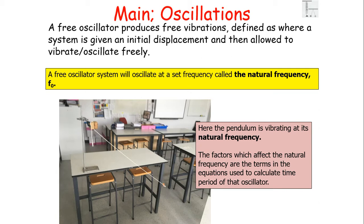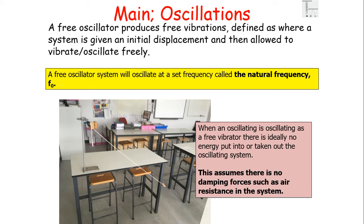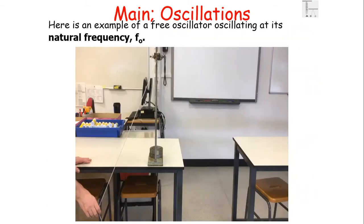The factors which affect the natural frequency are the terms in the equation used to calculate the time period of that oscillator, since time period equals 1 over frequency. When an oscillator is vibrating as a free oscillator, ideally there is no energy being put into or taken out of the oscillating system — the total energy remains fixed. This assumes there are no dampening forces such as air resistance or friction. Here is an example of a free oscillator oscillating at its natural frequency.